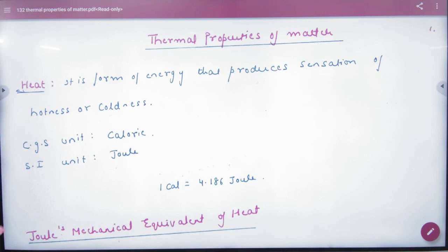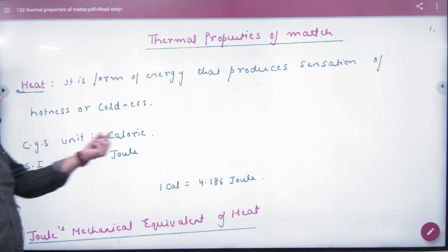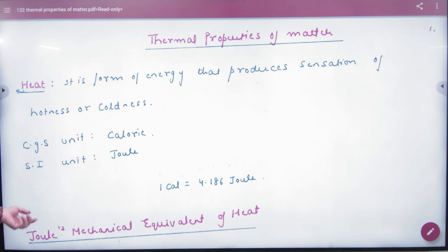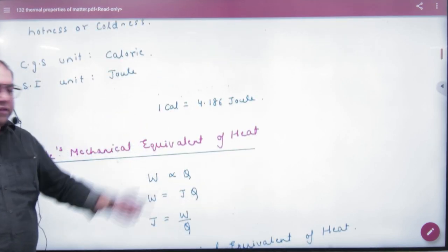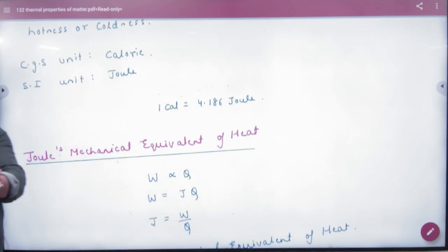Heat is a form of energy which produces sensation of hotness or coldness. Heat's CGS unit is calorie and SI unit is joule. One calorie is 4.18 joules, or approximately 4.2 joules.